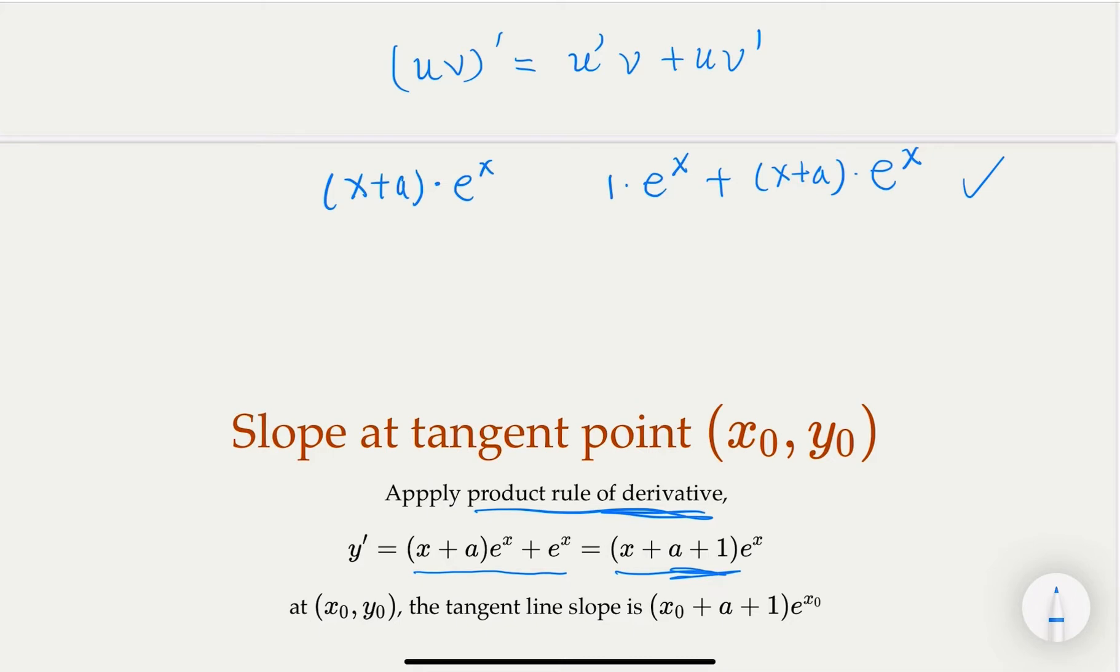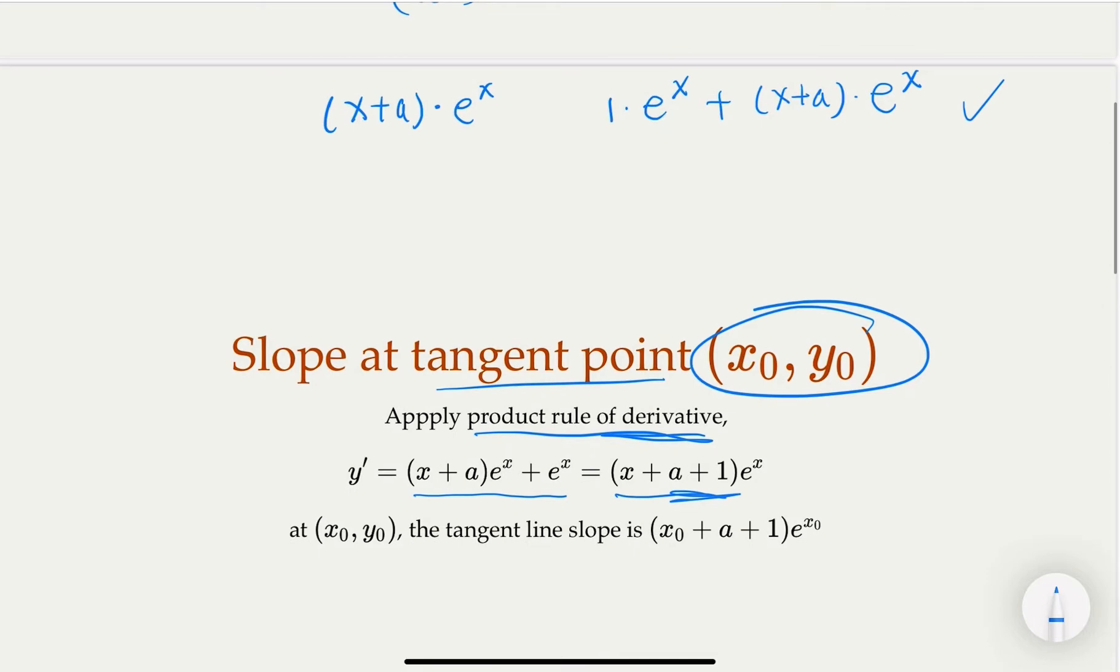Let's look at the tangent line. At tangent line, the derivative would be the slope of the tangent line. This would be the slope of tangent line equal to this. You plug in x here, it's x₀, so you get it.